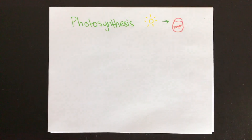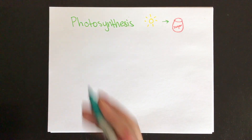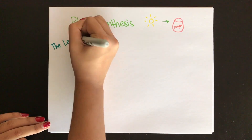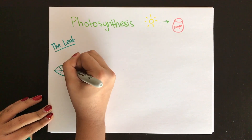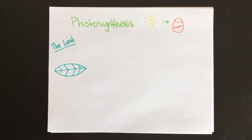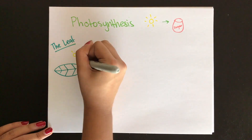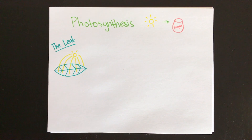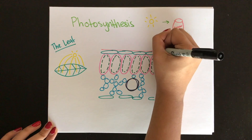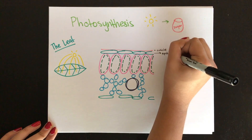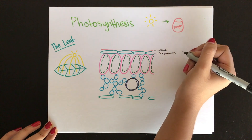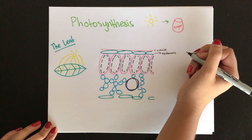The first aspect of a plant that we're going to talk about is the leaf. The leaf has a large surface area because it provides a large base for the sunlight to hit it. The outer layers of the leaf are called the epidermis and it has a layer of wax on the surface called the cuticle.